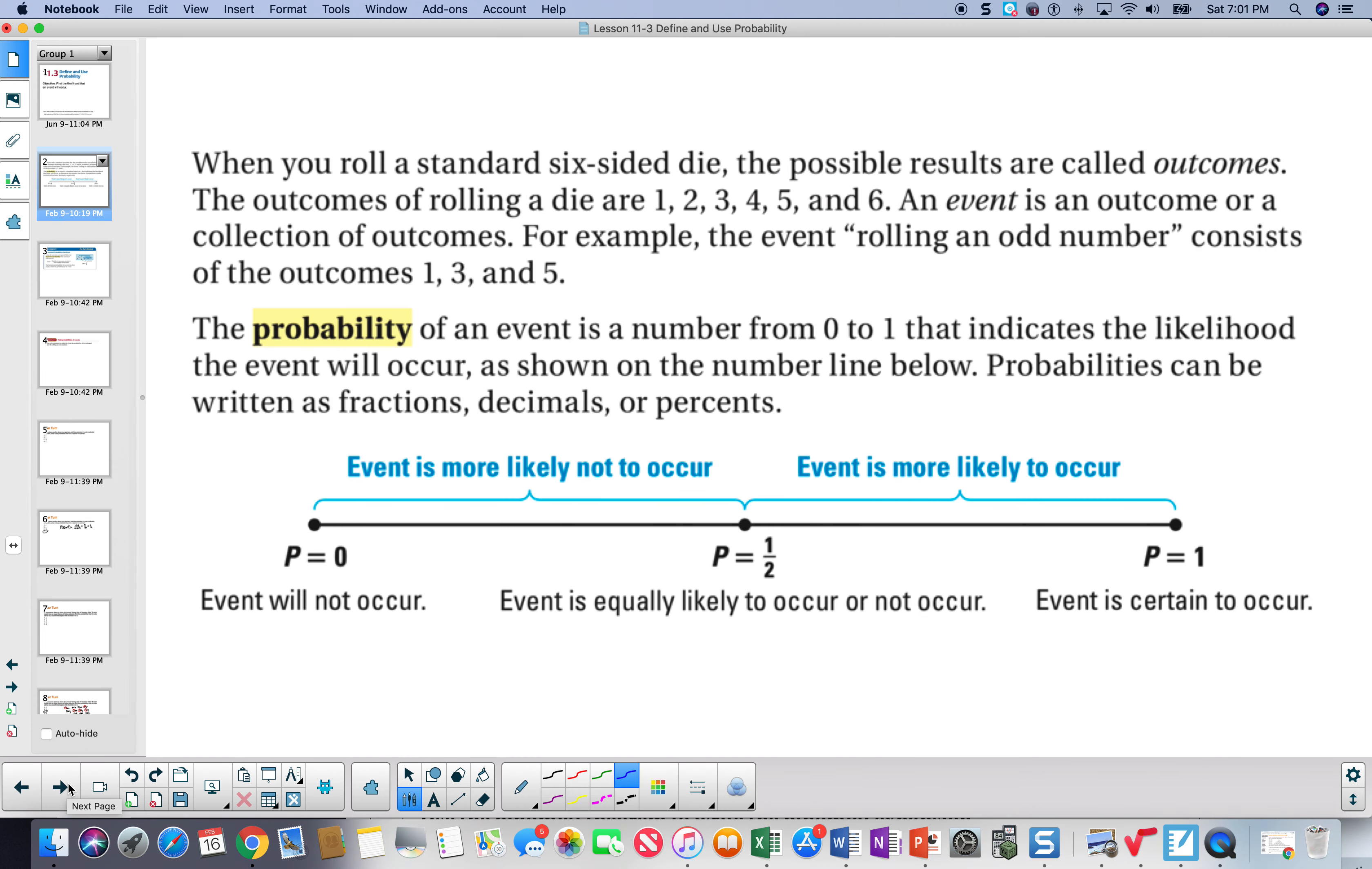Probability is an event and it's a number between 0 and 1. Probability of 0 means the event will not occur, where a probability of 1 is an event that is certain to occur. And then we have probabilities all the way in between.